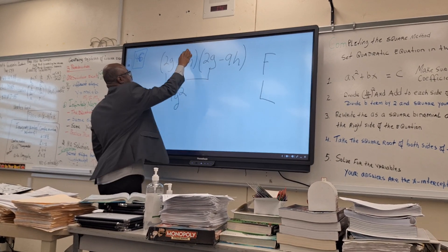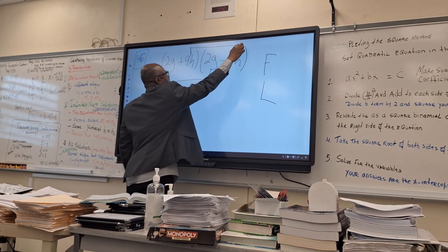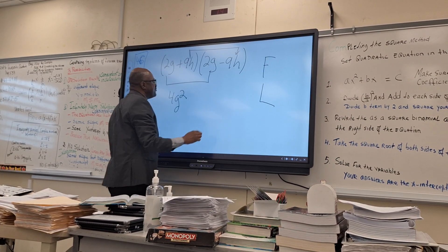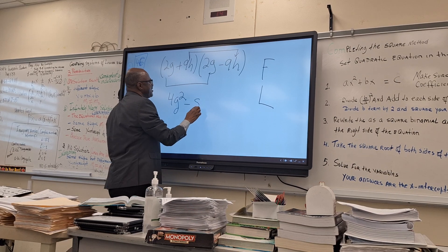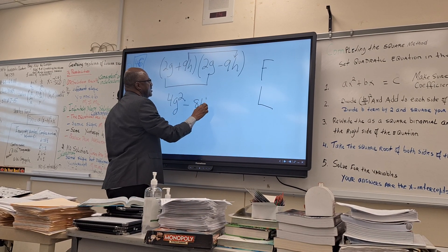And what is your last? 9H. 9H times negative 9H will give you negative 81 H squared.